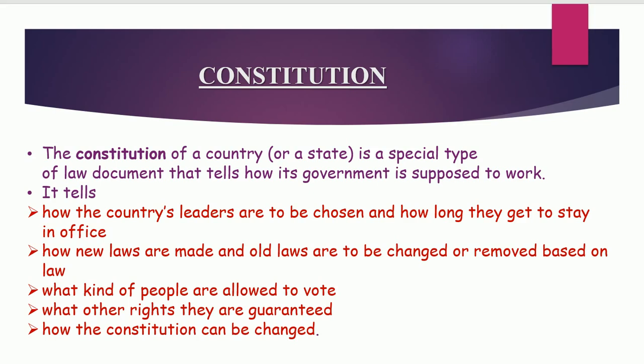Every year, we see that certain bills are passed by the government. Last year, you must have seen a heated topic was CAA/NRC. These laws are made - how these laws are made, and how old laws are changed, as we see that certain laws keep on changing through amendments. Like the POCSO Act. The POCSO Act is the Protection of Children from Sexual Offenses Act, especially for children. How these laws are amended and how we see changes in acts - everything is written in the constitution.